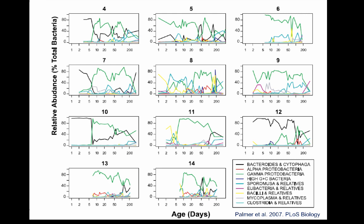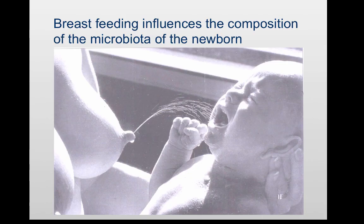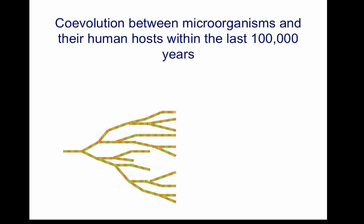If you follow these newborns even further, up to the age of two years, you will start to see an increasing stability of the microbiota — a microbiota which, by its composition, resembles the one that you find in adults. A number of factors affect the pattern of colonization. For example, breastfeeding influences the composition of the microbiota of the newborn, and you will hear in the second week of this course more about the mechanisms of this effect. But it's also interesting that you will find differences among human ethnic groups.